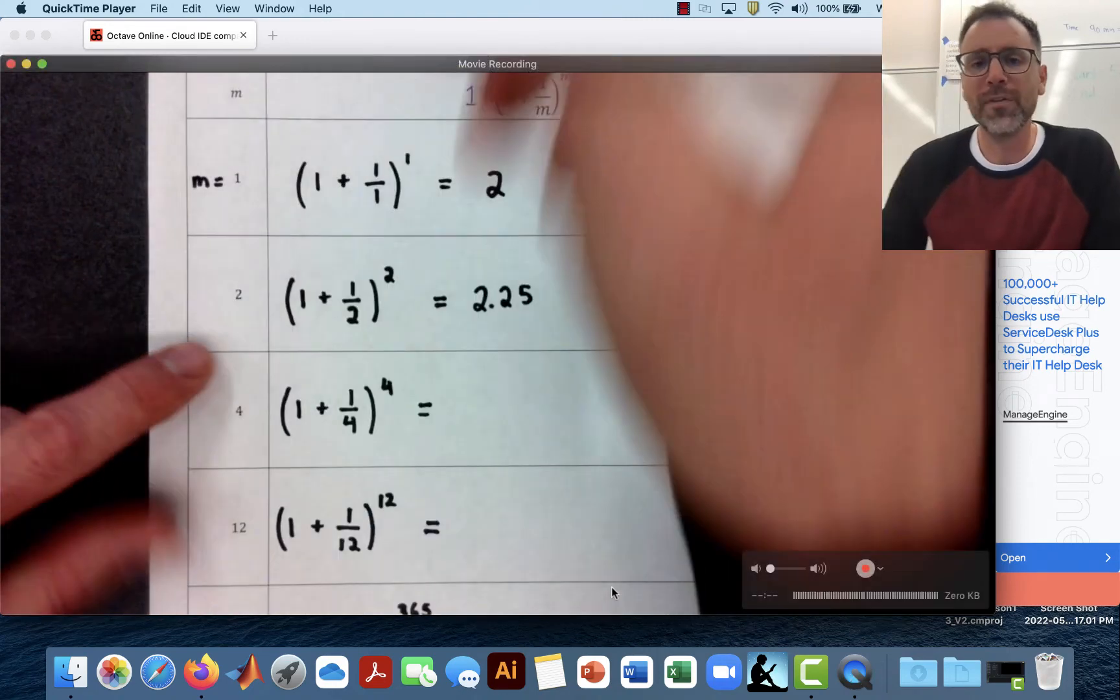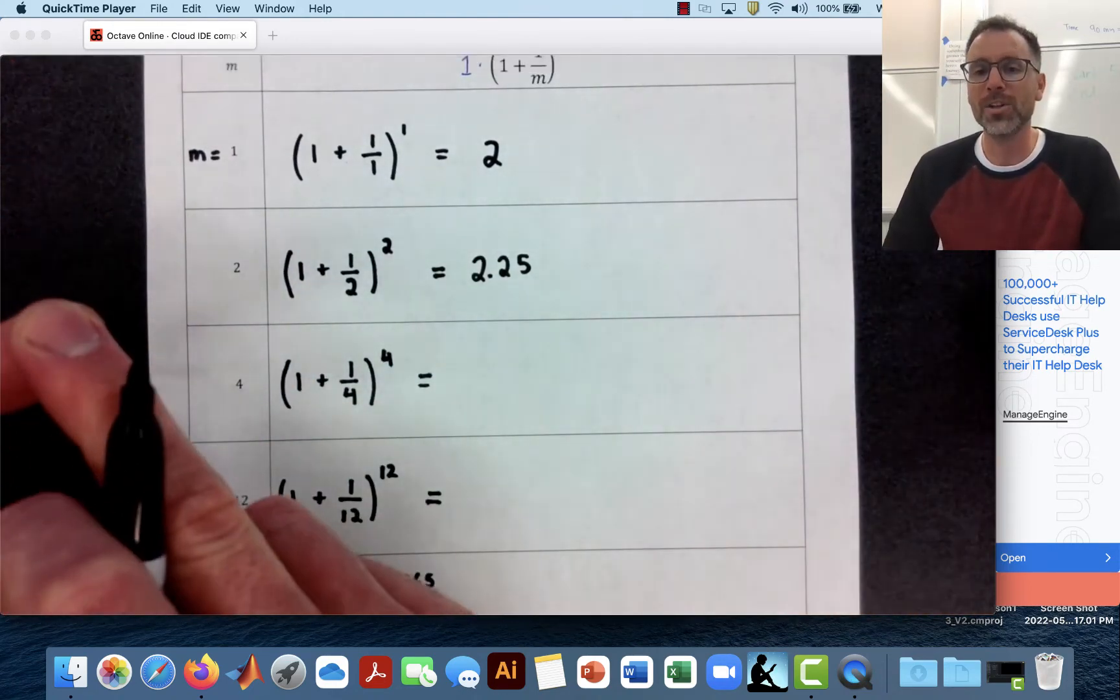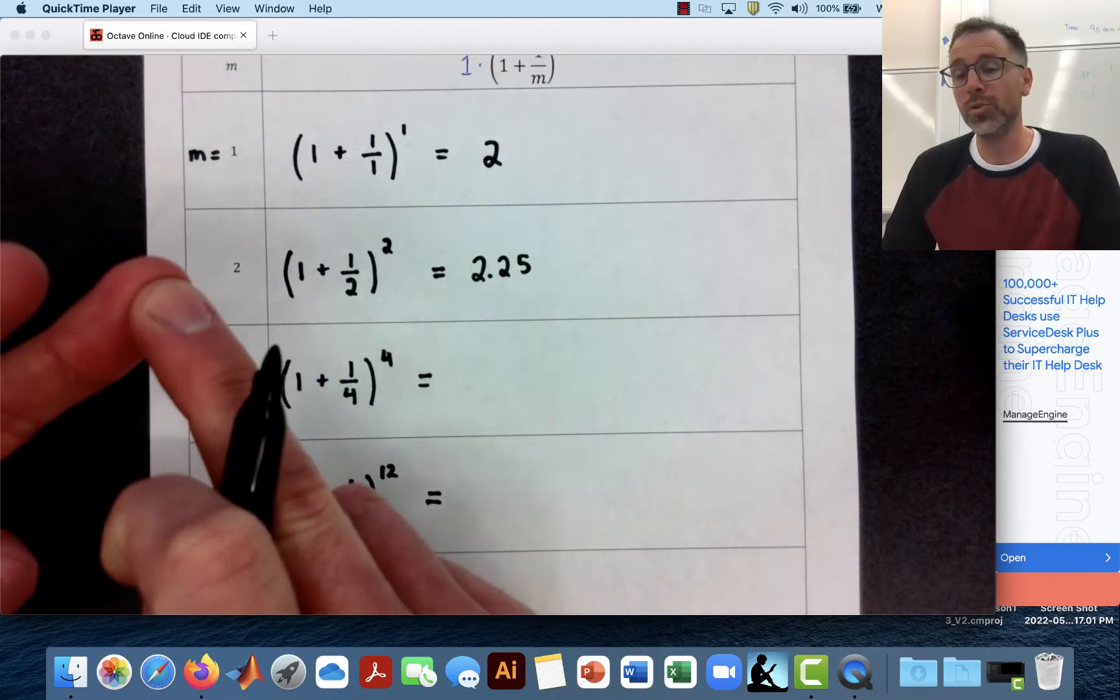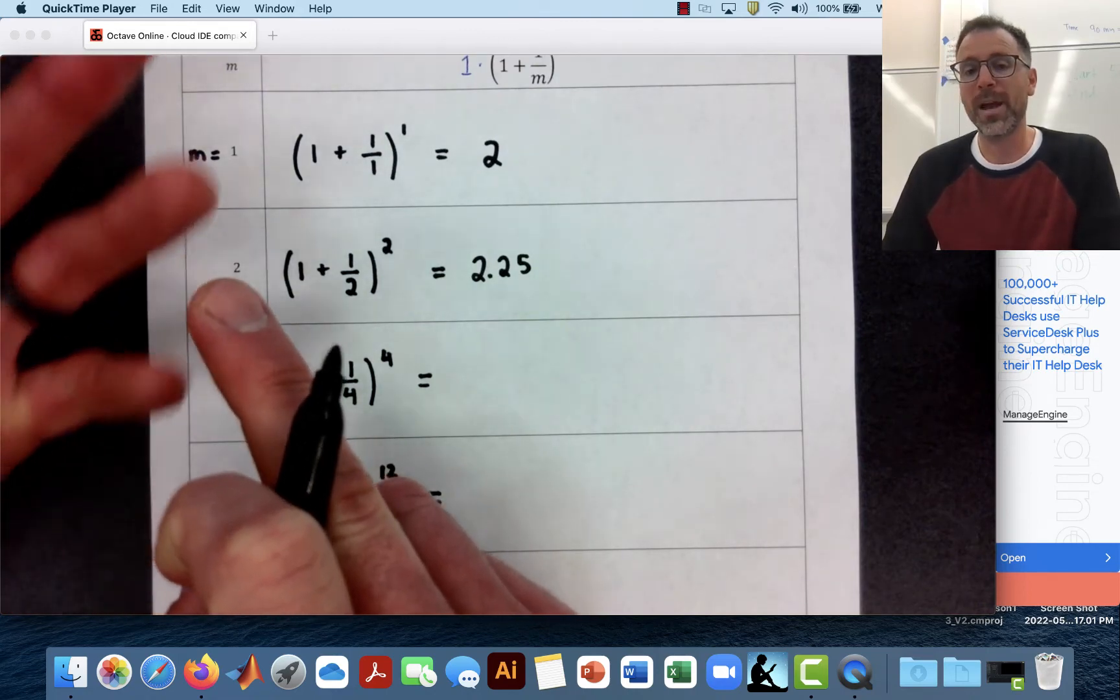So if I have 1 plus 1 half raised to the second power that looks like it's going to be 2.25. So this thing is going to be 2.25. In other words if I compound twice I'm going to have this amount of money. Right? So the next question is what if I compounded four times a year? What if I compounded at the end of March, the end of June, the end of September, and the end of December?